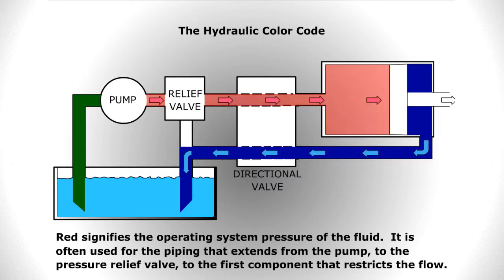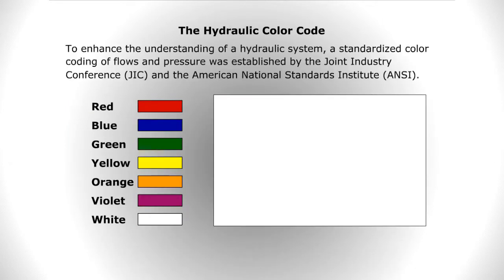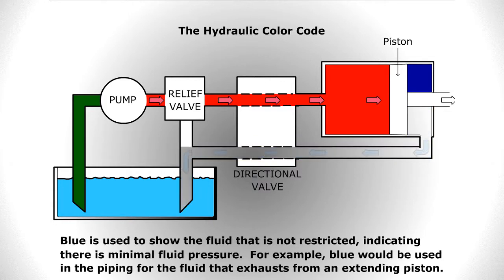Red signifies the operating system pressure of the fluid. It is often used for the piping that extends from the pump to the pressure relief valve to the first component that restricts the flow. Blue is used to show the fluid that is not restricted, indicating there is minimal fluid pressure.